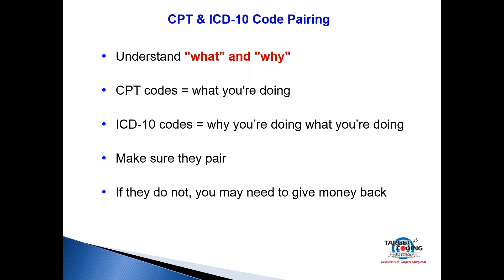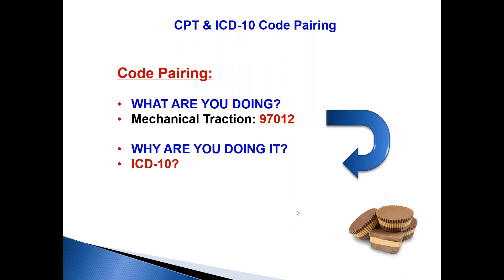Understand the what and the why. CPT codes are what you're doing — like a chiropractic adjustment, 98940. That's a CPT code. ICD-10 codes are why you are doing what you're doing. For example, a subluxation is a diagnosis. So a chiropractic adjustment pairs beautifully with subluxation. They have to pair. If they don't pair, you may need to give money back to an insurance company.